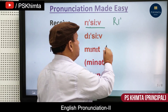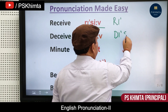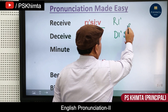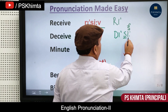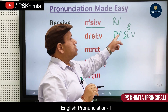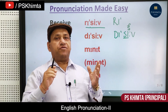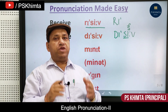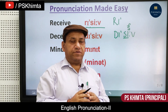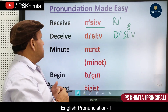Next we have 'deceive.' This word starts with 'd,' then give a pause, and say 'ceive': deceive. For example: 'He deceived me in business.' Practice this and you will be able to speak it correctly.